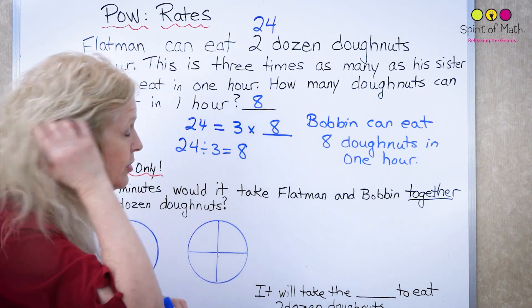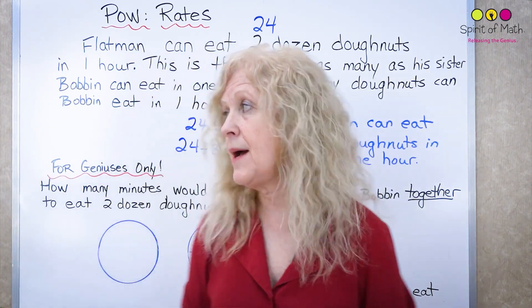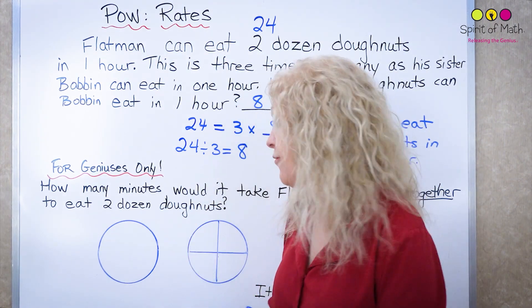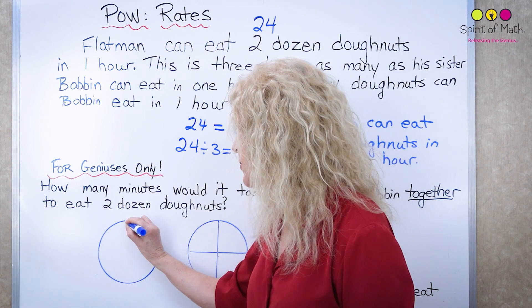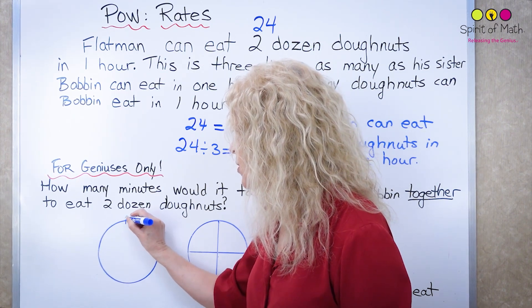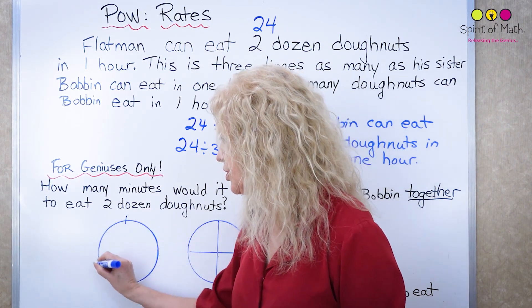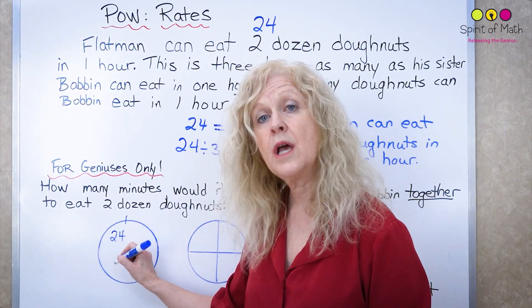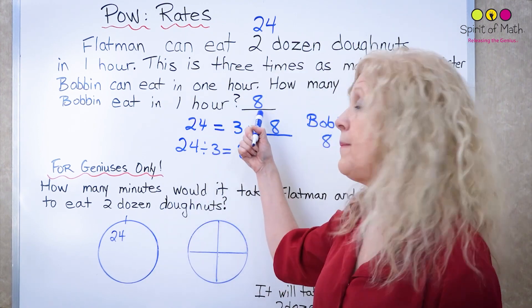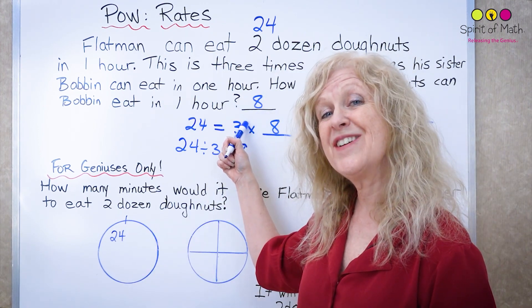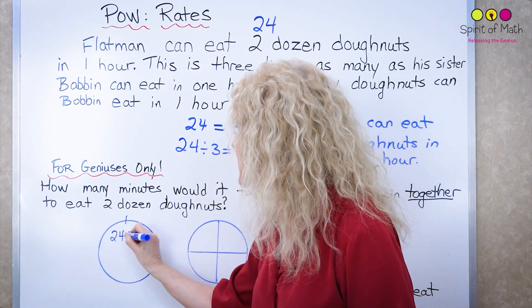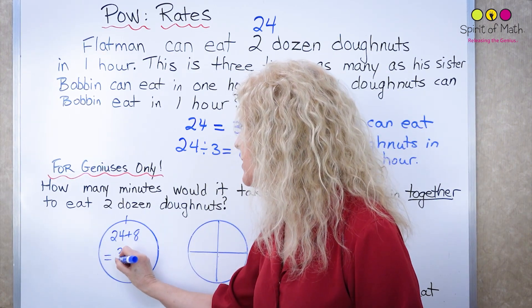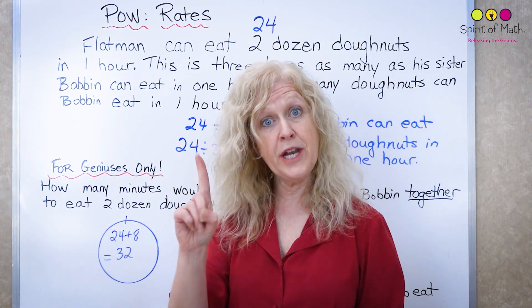Okay so let's look at this and think about what's happening. Well we know that Flatman can eat 24 so this is one hour. If we pretend that this is like a clock and when you go around the clock in one hour Flatman can eat 24 doughnuts and you know from before that Bobbin can eat eight doughnuts in the same hour. So if they're eating together that would give them 32 doughnuts in one hour.